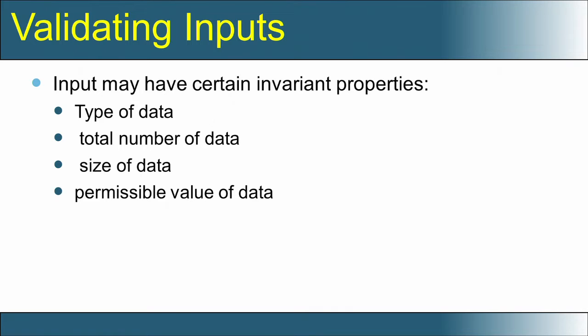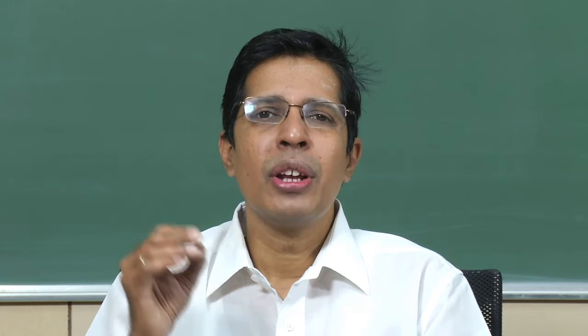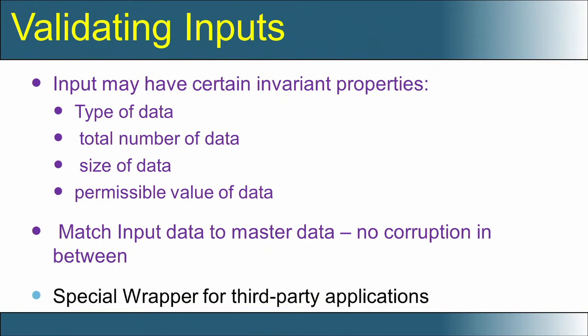For example, the type of data — the input should be an integer but we give a floating point number — or the total number of data fields, the size of data such as an array of 10 integers, or the permissible value of data where the data should be in some range, say between 1 and 3. We can also match the input data to the master data.